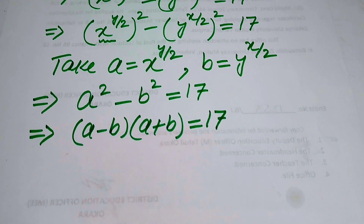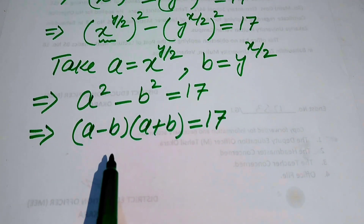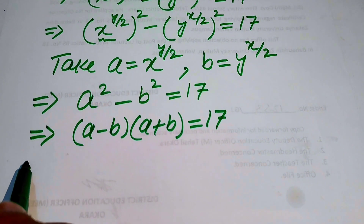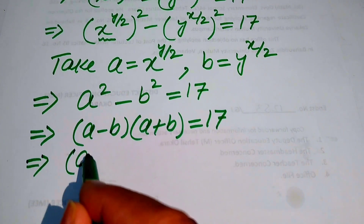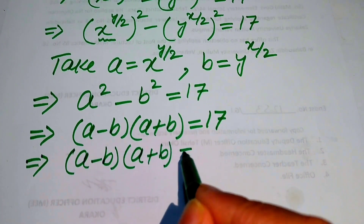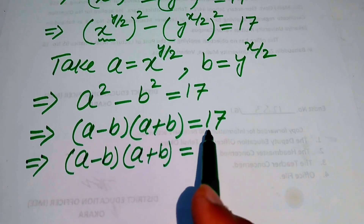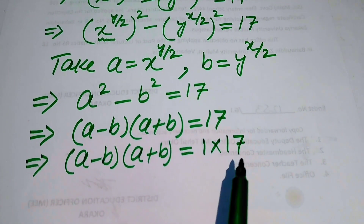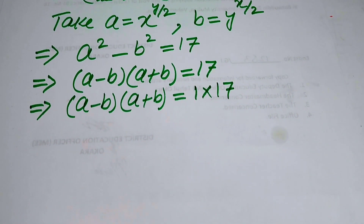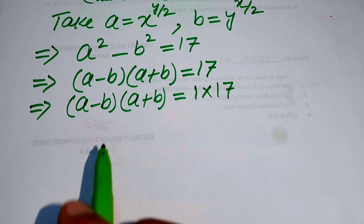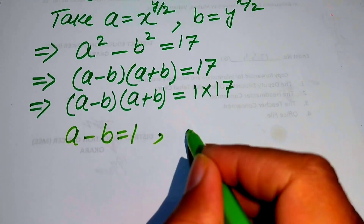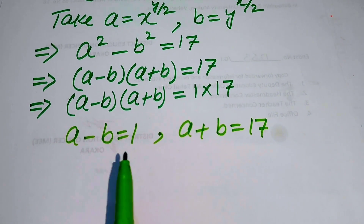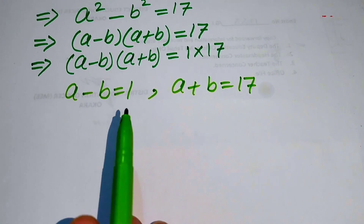On the left hand side we have two factors multiplied together, but on the right hand side we have only one factor, 17. We need two factors on the right hand side whose product is 17. Since 17 is prime, 17 equals 1 times 17. Comparing both sides, we set a minus b equals 1 and a plus b equals 17.